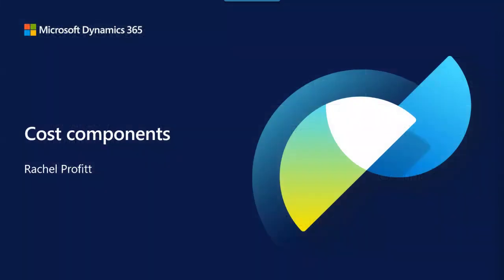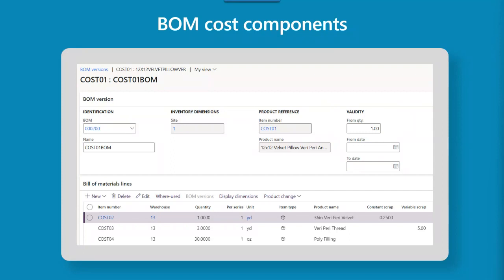Now let's dive into the details of how cost is calculated for each component. The bill of materials is the list of items consumed to create a finished good product. Here you can see a sample BOM for our 12x12 velvet pillow with three lines. The site field is mandatory for a BOM version — standard costs are always set by site, and any BOM calculation is always done by site regardless of costing methodology. If you manufacture an item in more than one site, you'll need one BOM version per site.